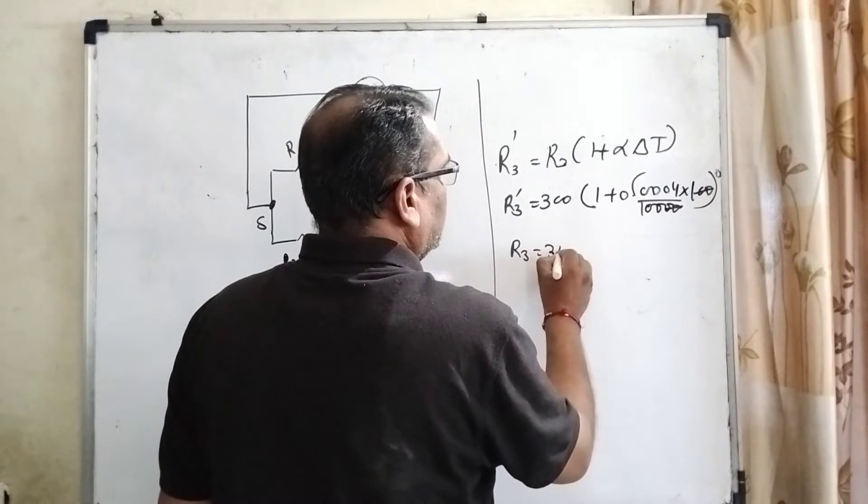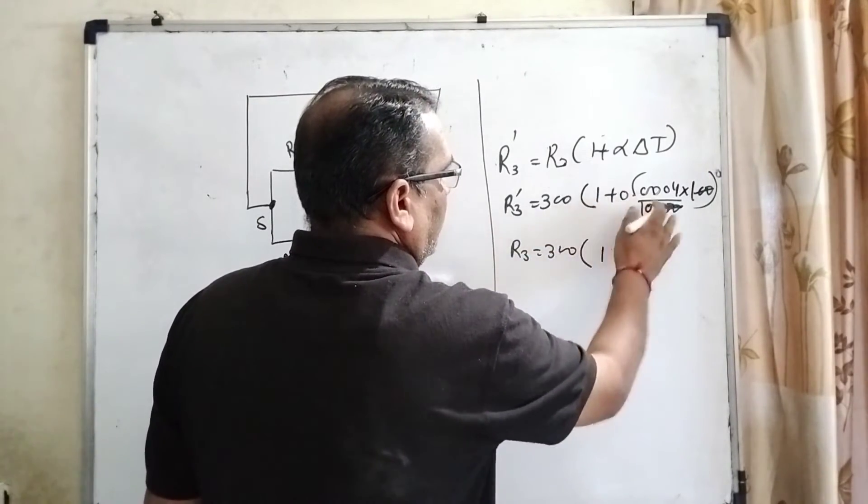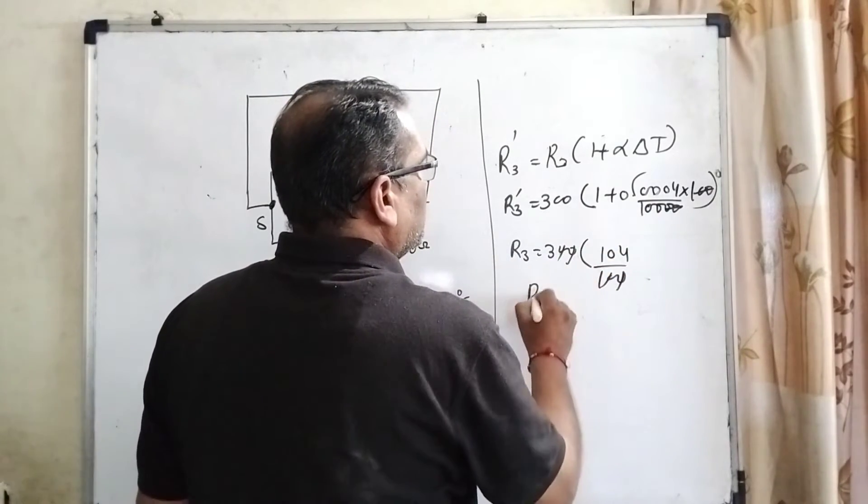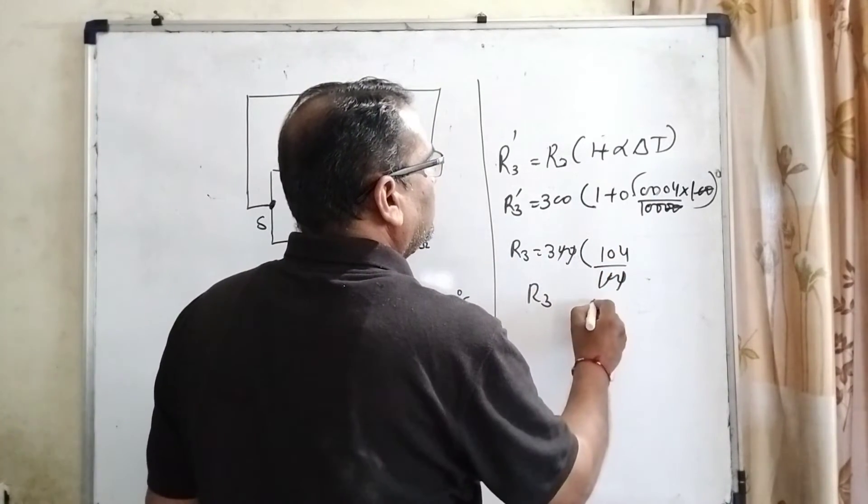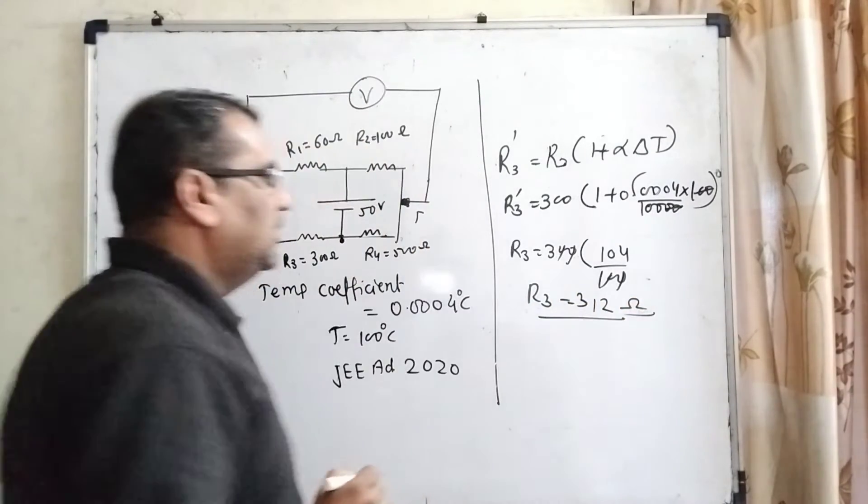R3 dash equals 300 times 104 by 100. So R3 dash equals 312 ohms. The new resistance becomes 312 ohms.